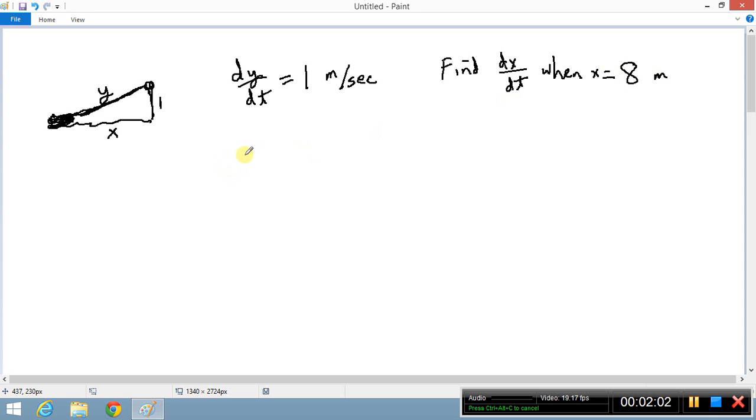Alright, so we need to relate the variables, and here again the Pythagorean theorem seems pretty obvious. I only have one triangle. I'm not going to go looking for similar triangles if you only have one triangle. So x squared plus one squared equals y squared relates the variables. If you differentiate both sides, this gives you 2x dx/dt, because t is the independent variable not x, equals 2y dy/dt. Similarly, y is not the independent variable. We can cancel the 2's.